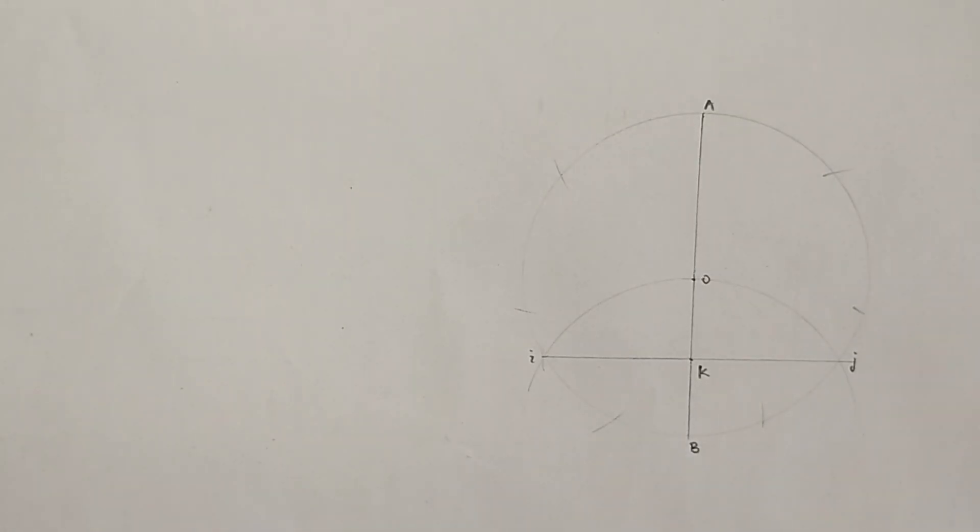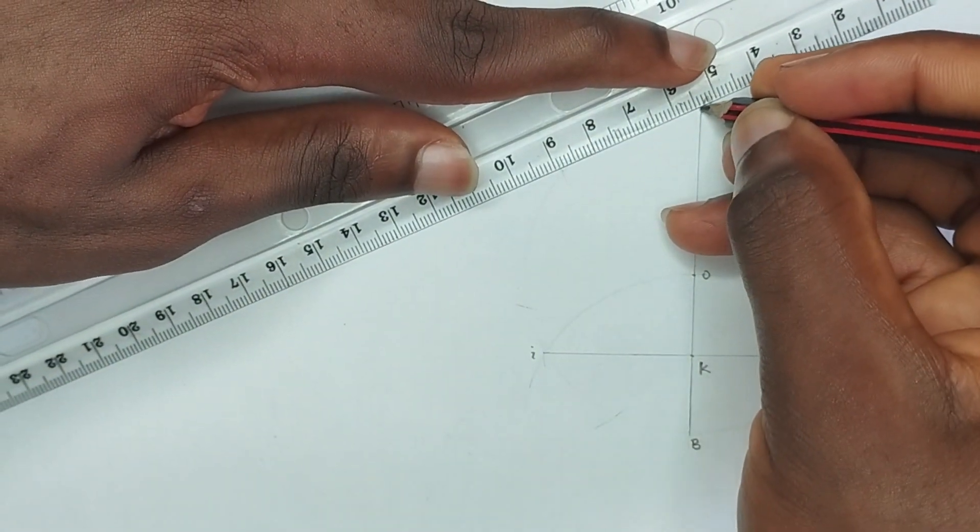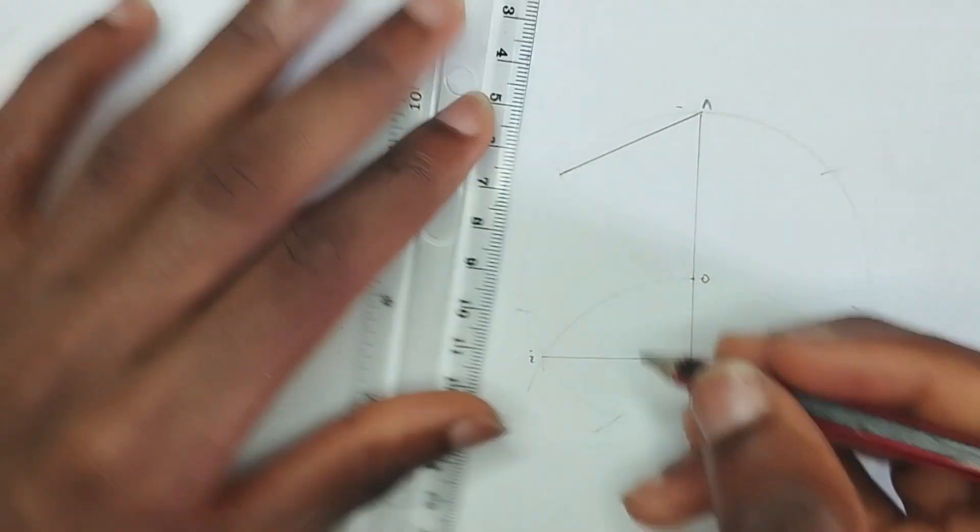I'm going to join this together to form my heptagon which is inscribed in a circle.